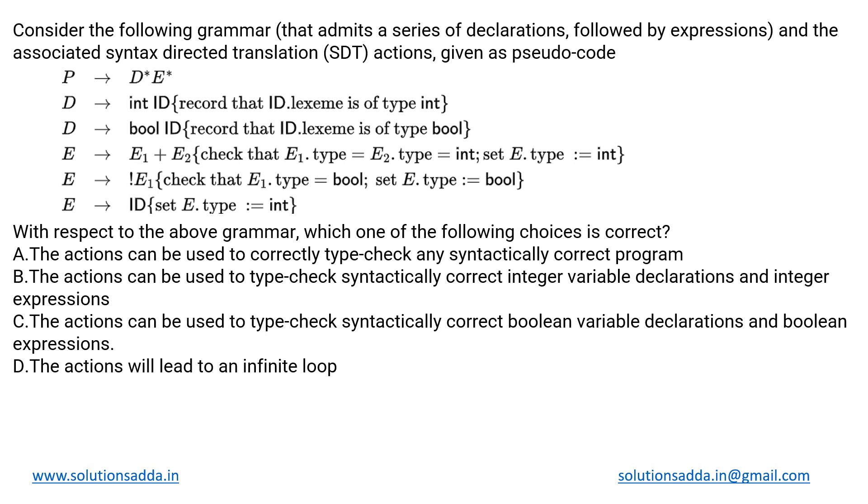This is a compiler design question about SDT. We have been given a grammar along with the semantic rules making up this SDT, and we have to identify what this is actually doing. Then based upon that we'll answer which of the given choices is correct. It's an MCQ type question, so only one would be correct. Let's first have a look at the grammar. It says that P derives D star E star. Here they have not specified what this star means; it can be a terminal symbol only unless specified otherwise, so we will assume this star to be a terminal symbol itself.